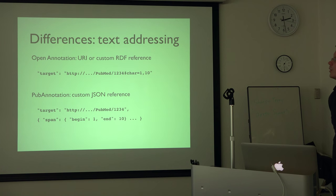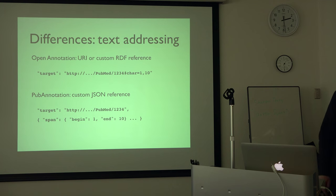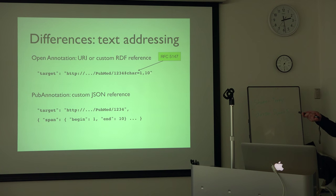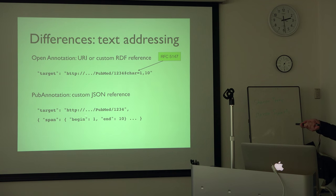Another point of difference is text referencing. Open annotation does define a custom RDF reference form, which I think is over-engineered and really difficult to use. But additionally, you can just use any URI, and we have this standard way of referencing spans in text — a text fragment URI. Pub annotation uses a standoff-style custom JSON format for reference.